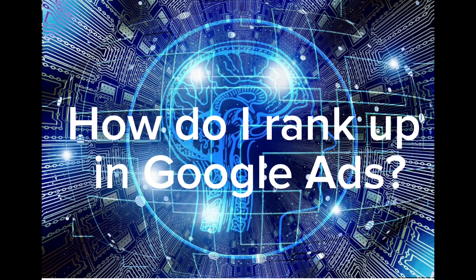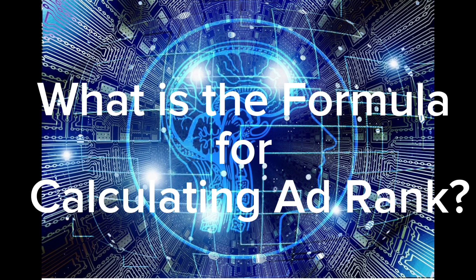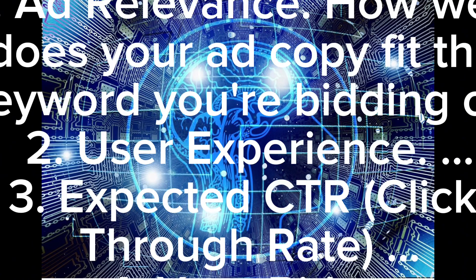How do I rank up in Google Ads? What is the formula for calculating ad rank? The factors include: ad relevance — how well does your ad copy fit the keyword you're bidding on; user experience; and expected click-through rate (CTR) for your bid.